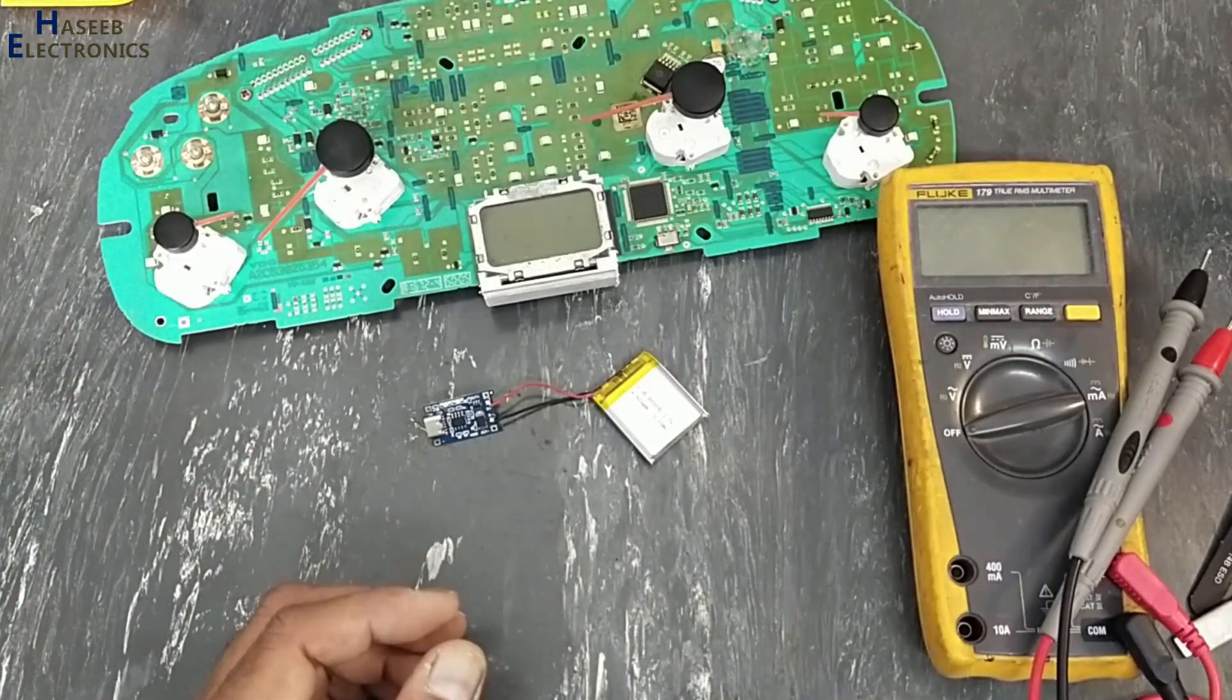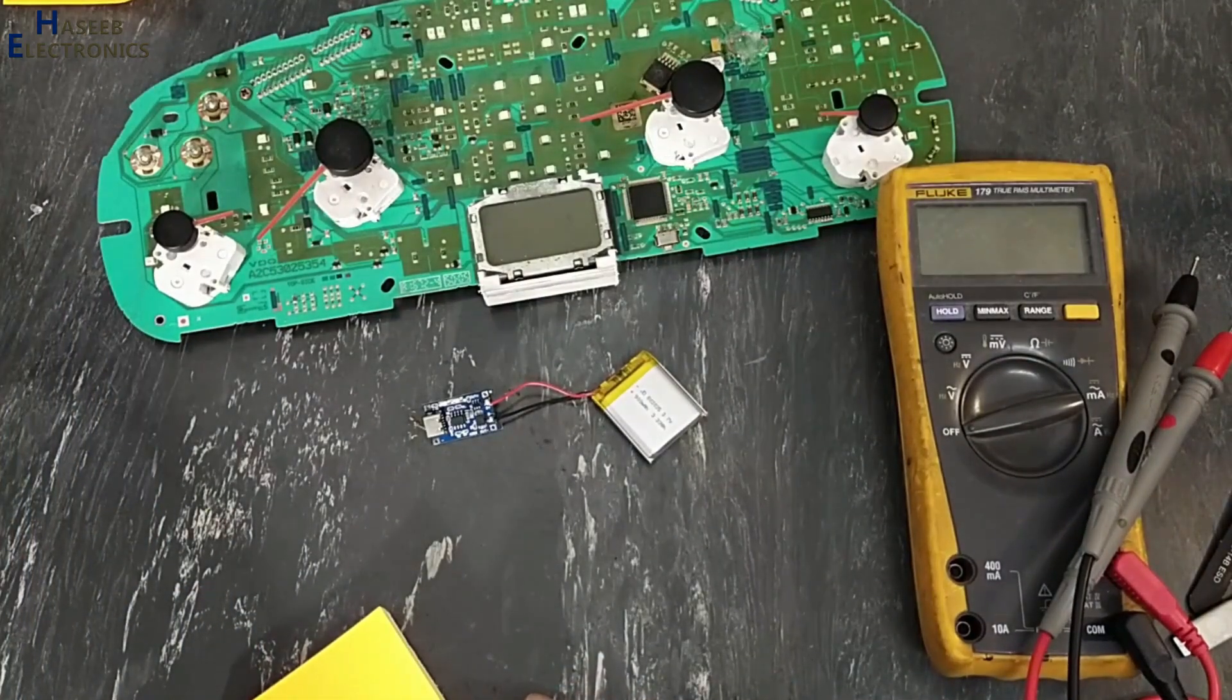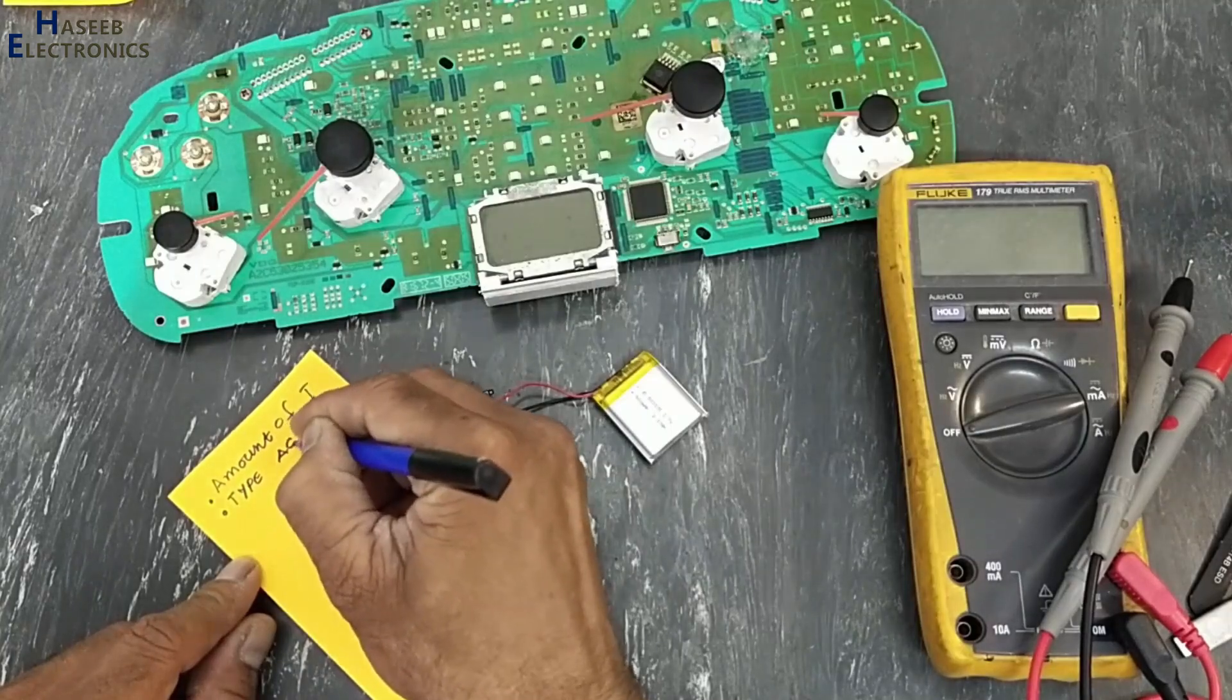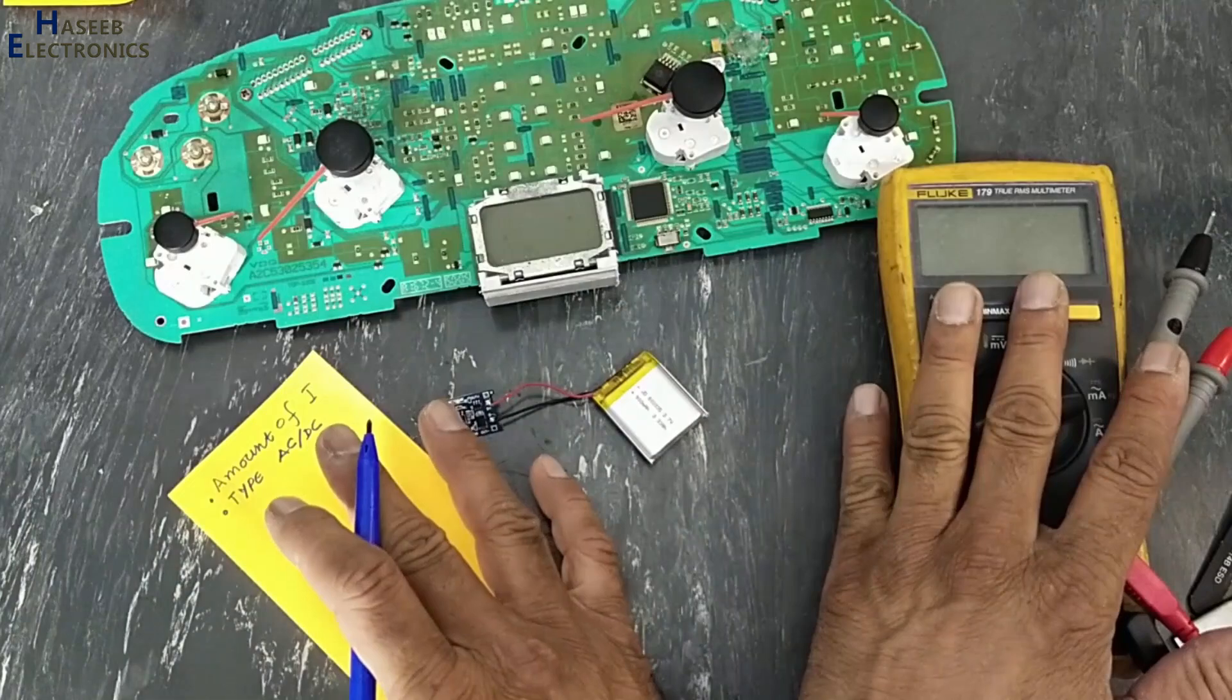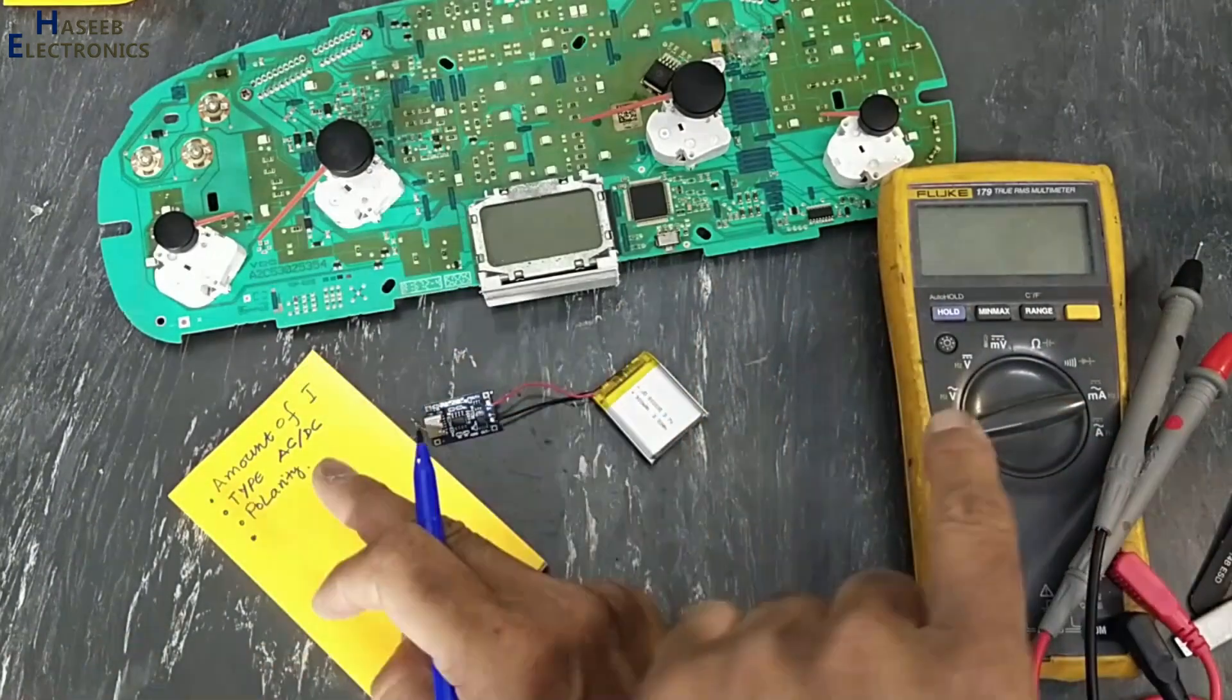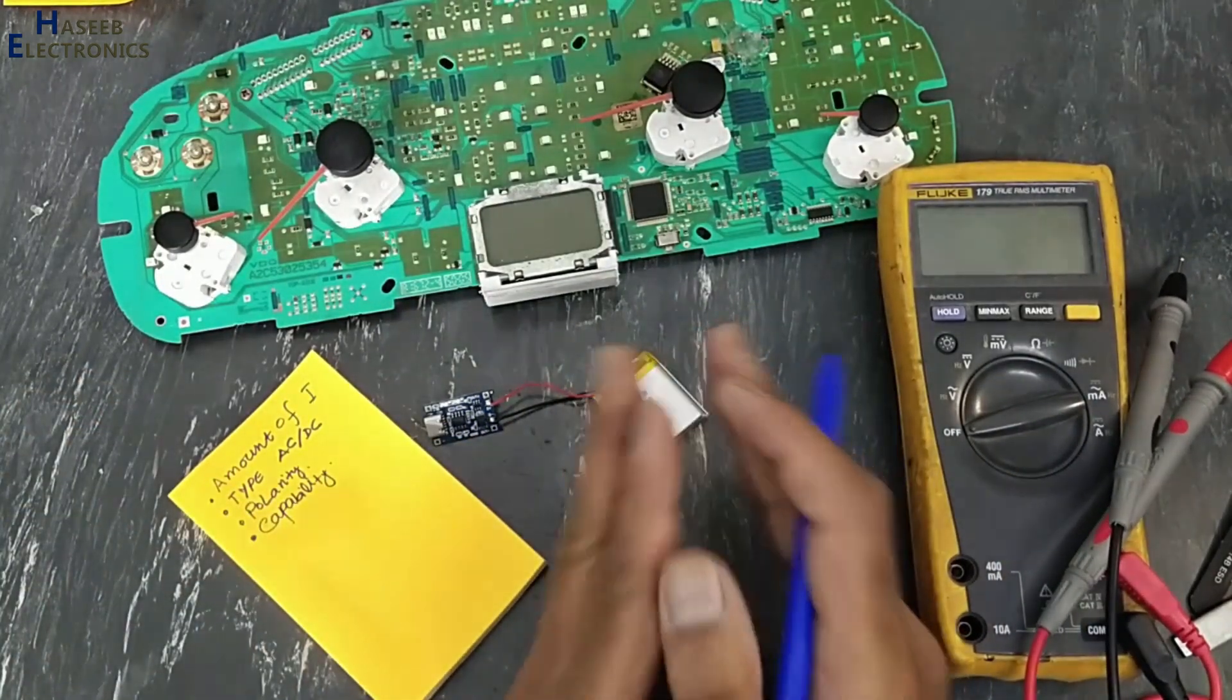What are the safeties when we want to measure current? There are some basic points to be considered before measuring current: amount of current, current value, type of current AC or DC, then polarity of current. If you are using digital multimeter the polarity will not matter, but if you are using analog multimeter that time polarity is very important. What is the capability of the test and measurement device? These are basic parameters when we are measuring current.